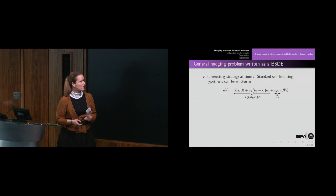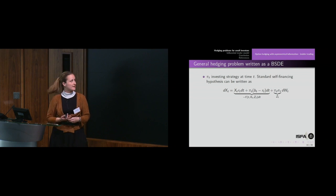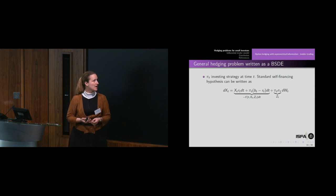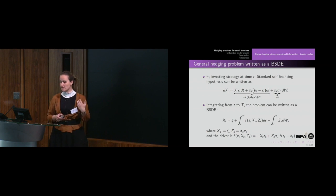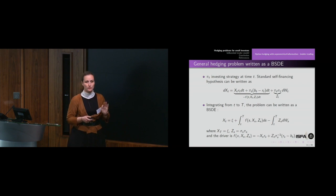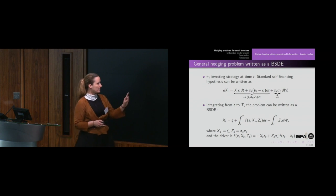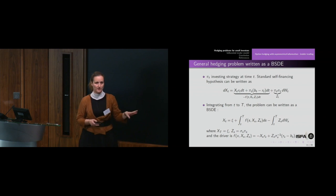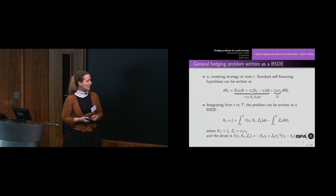We rewrite the hedging problem as a backward stochastic differential equation. We denote by pi_t the investment strategy at time t, and write the standard self-financing hypothesis. Rewriting and integrating from t to T, the hedging problem can be rewritten as a backward stochastic differential equation with a specific driver F that has very nice properties.